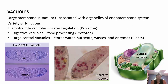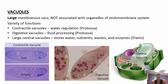Vacuoles are large membranous sacs not associated with the endomembrane system. Contractile vacuoles in protozoa regulate water — if too much water builds up, they contract and squeeze it out. Digestive vacuoles process food. Large central vacuoles in plant cells store water, nutrients, waste, and enzymes. These large central vacuoles are another structure plants have that animals do not.